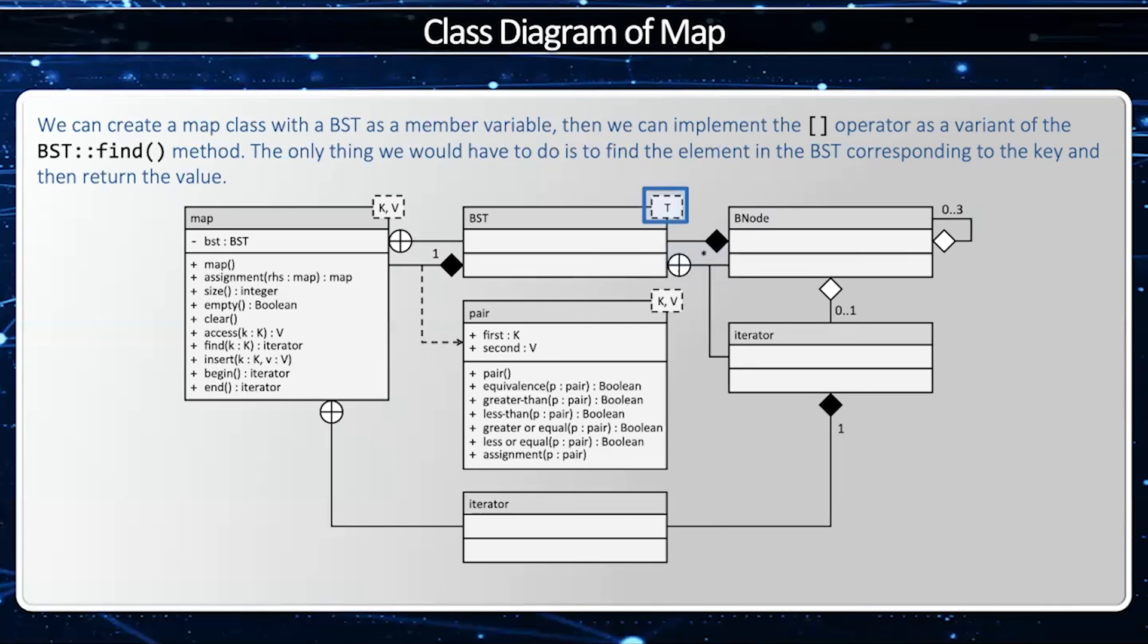The BST is a template class, which means it can handle any data type. We also have an iterator to the binary search tree. And this iterator is going to have 0 or 1 references to a binary node through association. 0 if we're the end iterator, and 1 if we're any other iterator.